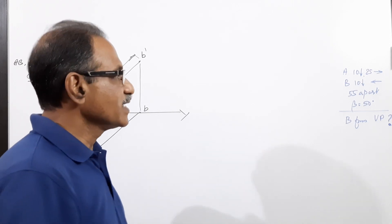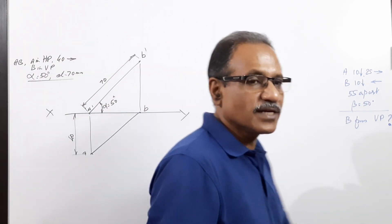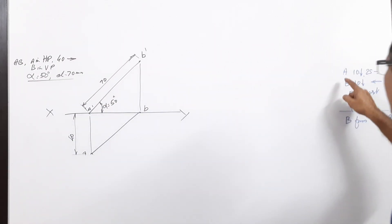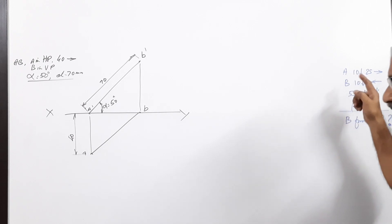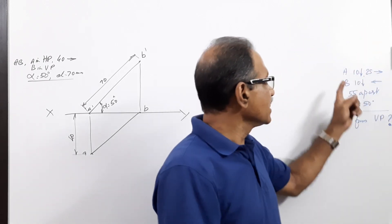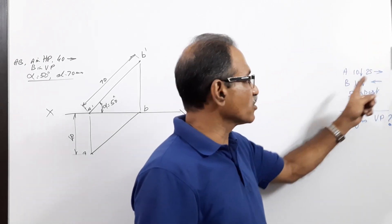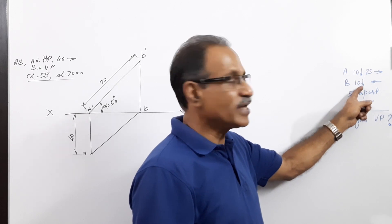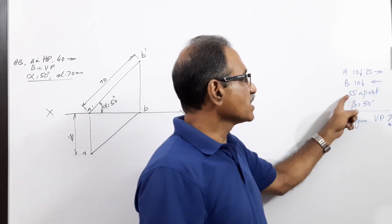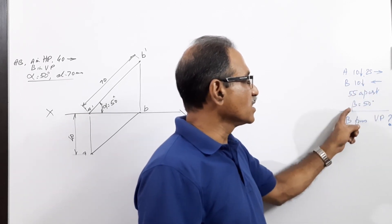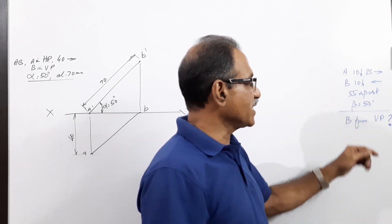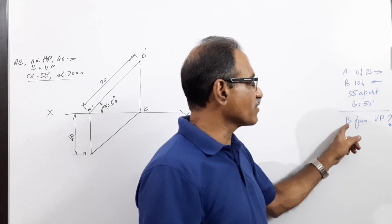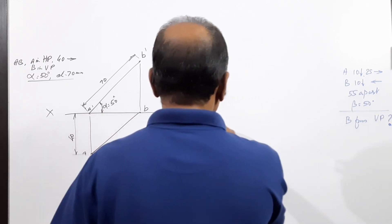The second question: Line AB — A is 10mm below HP and 25mm in front of VP. B is 10mm below HP and behind VP. The projectors are 55mm apart. The top view makes 50 degrees to XY line. Draw the projections and find the distance of B from VP.